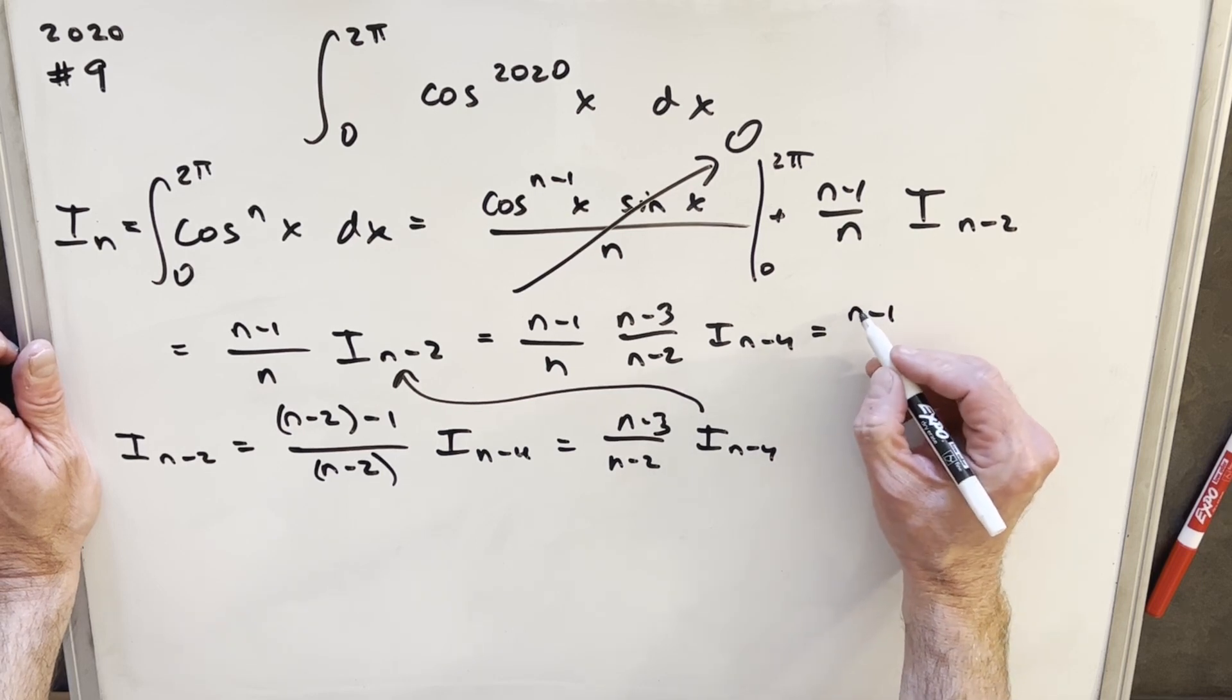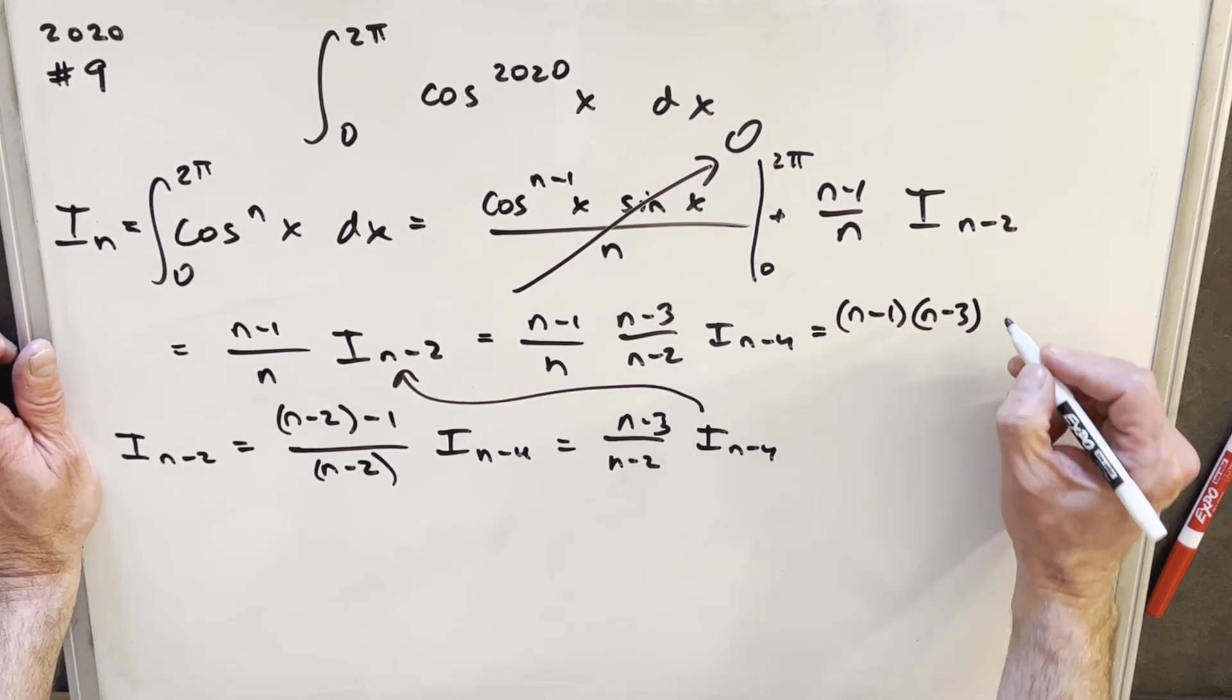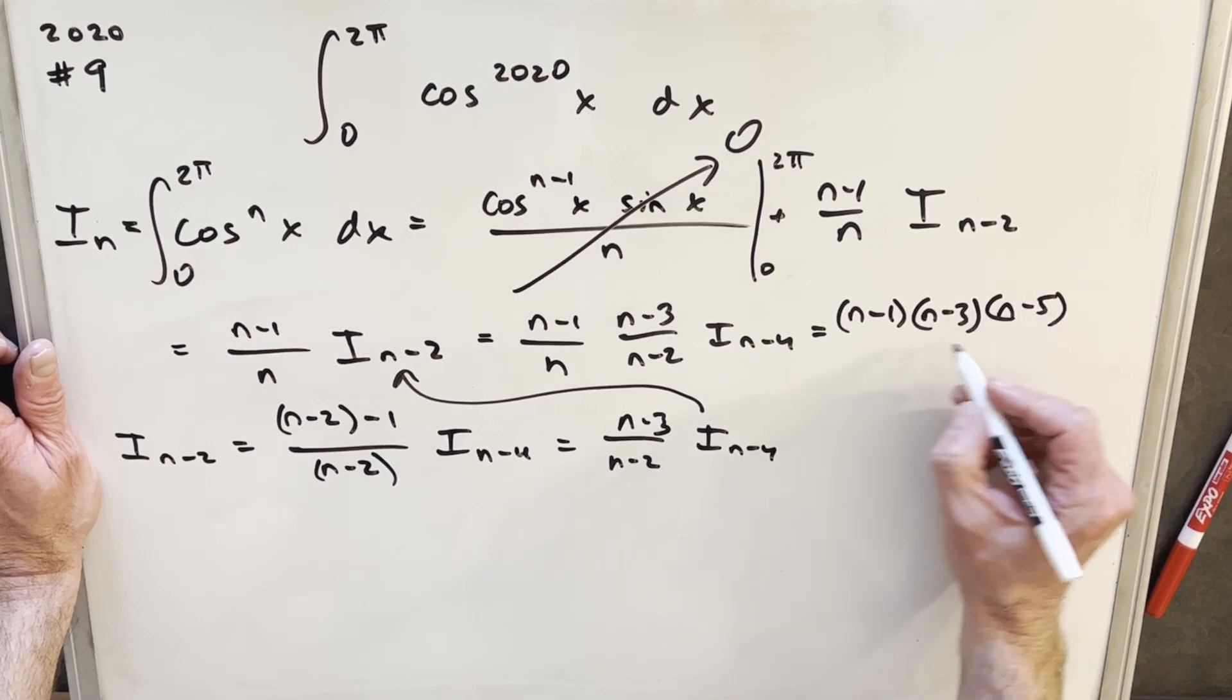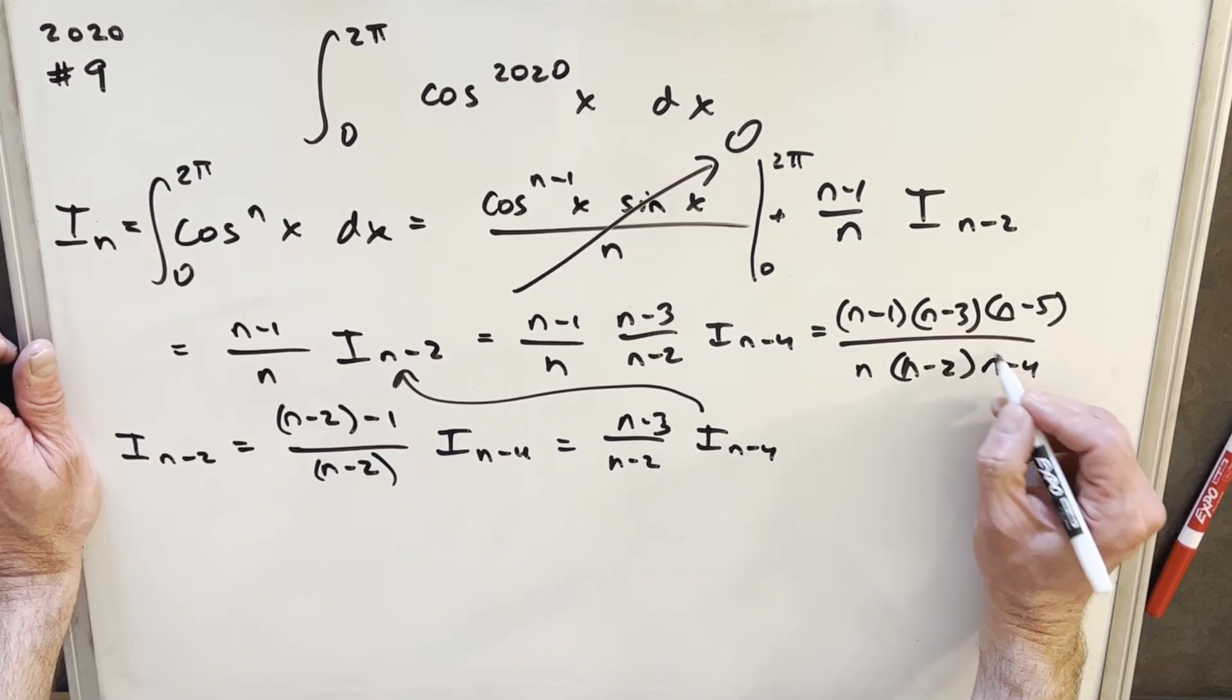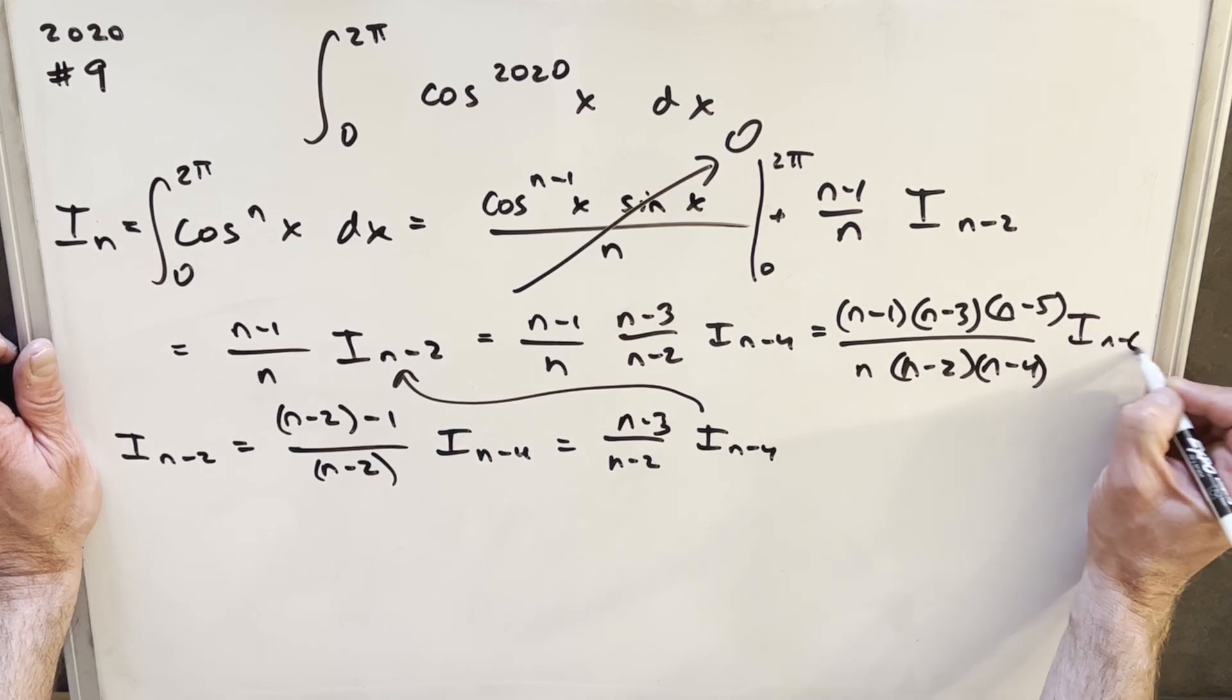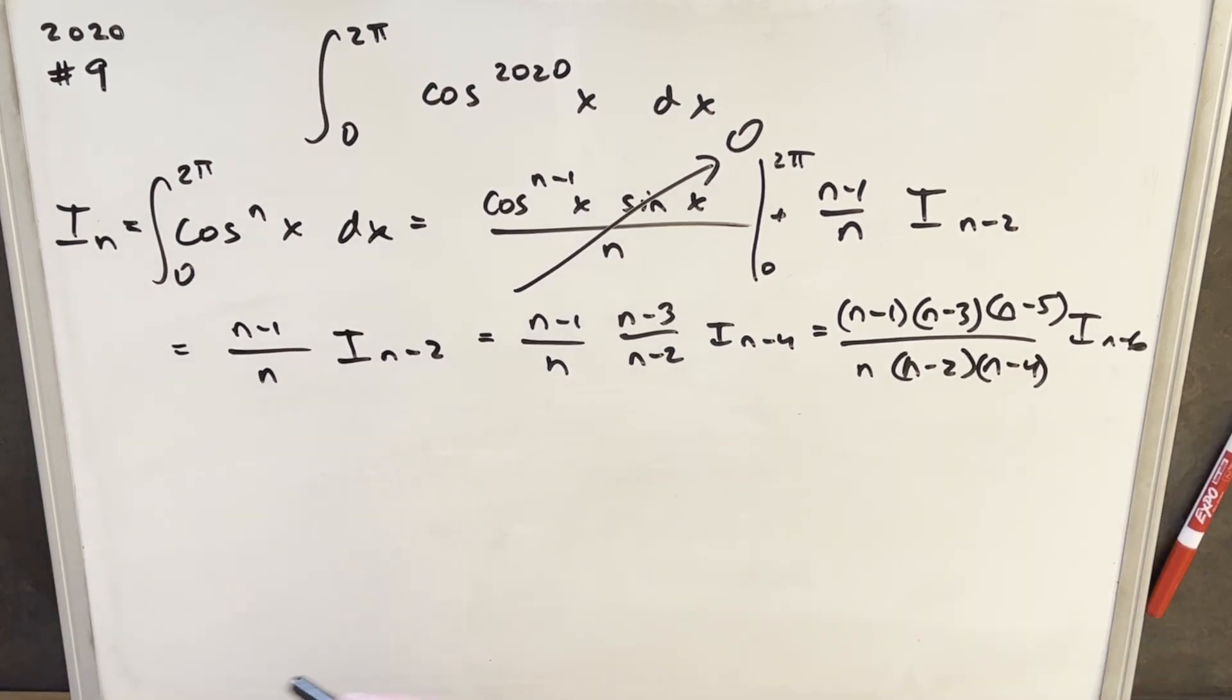We'll have n minus 1 times n minus 3. Then we'll have n minus 5 over n, n minus 2, n minus 4, i n minus 6. And of course, I'm not going to bore you by doing it a thousand times. But what we can notice,